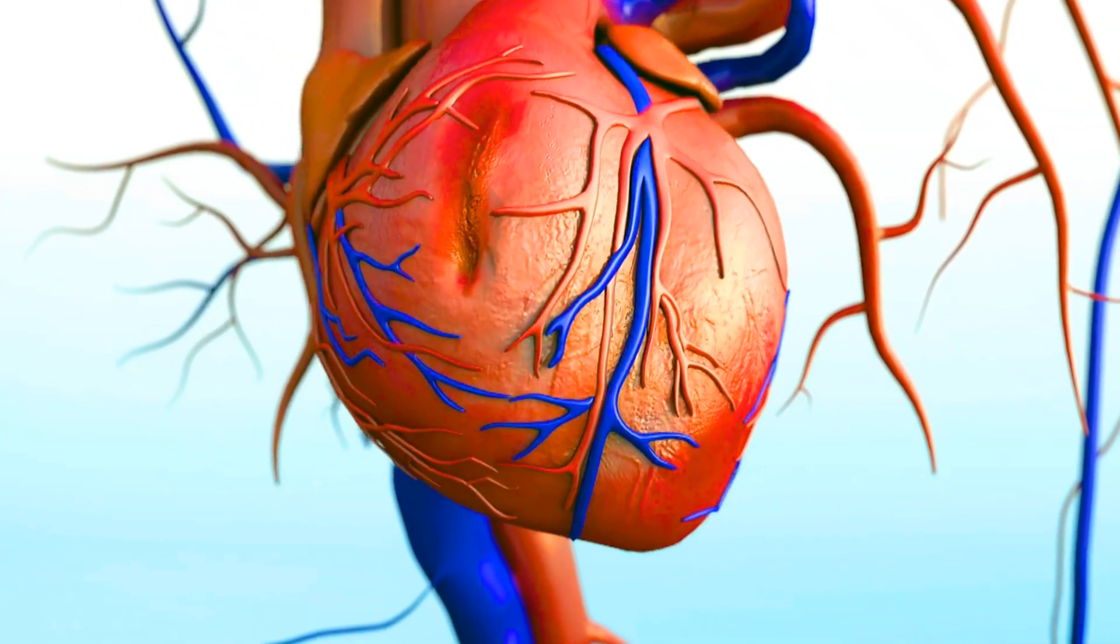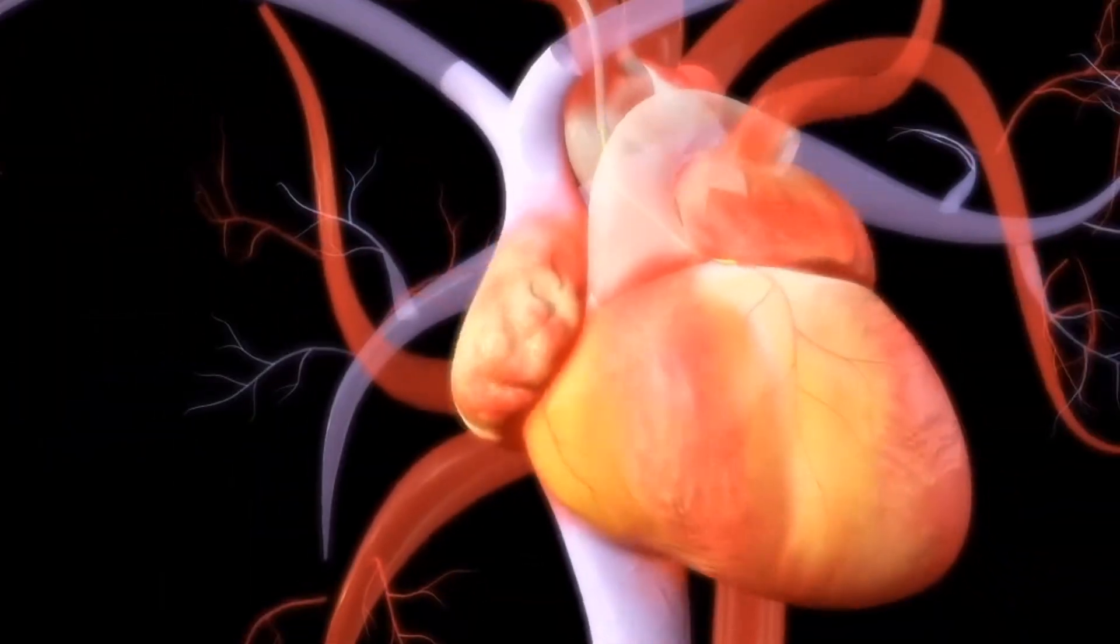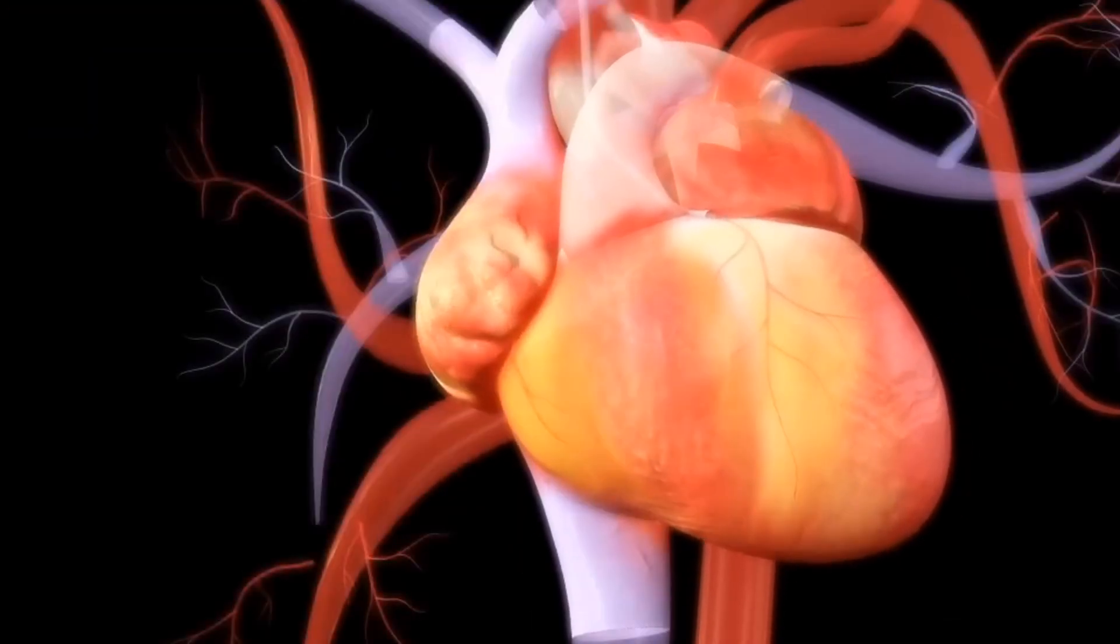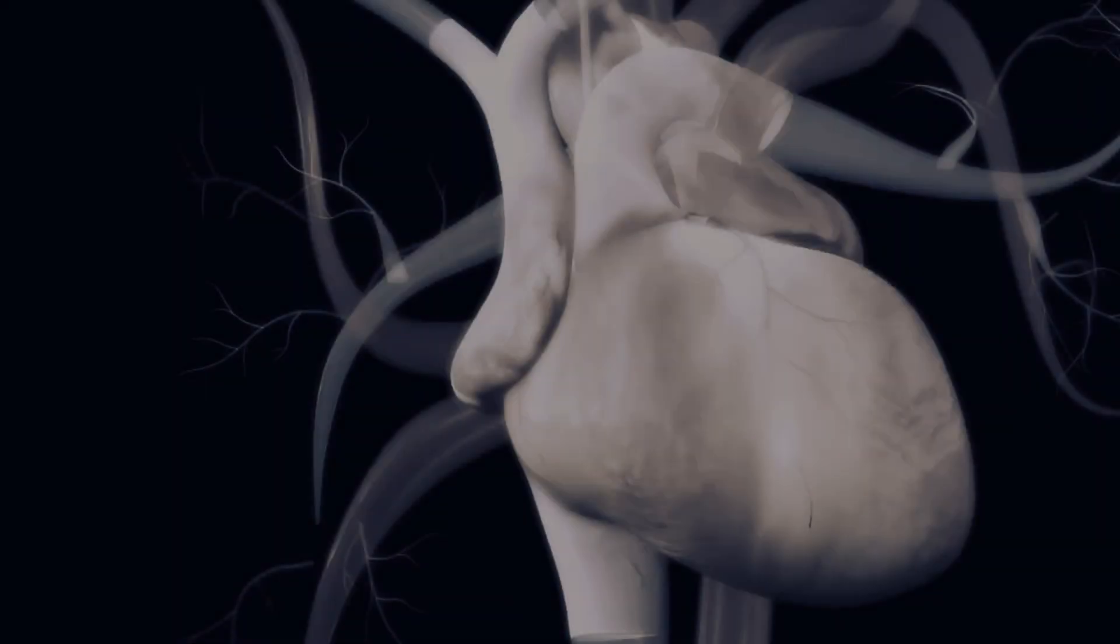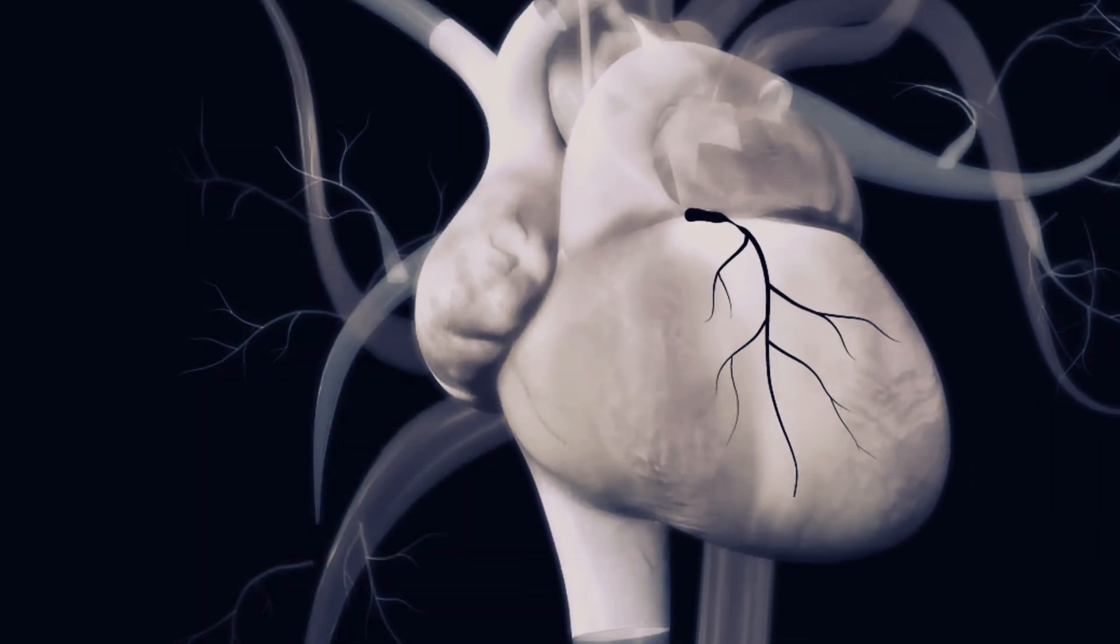At this point, your doctor will remove the guide wire, position the tip of the catheter just inside the coronary artery to be treated, and inject a special dye. The dye allows the fluoroscope to take x-ray images called angiograms of the artery's interior.